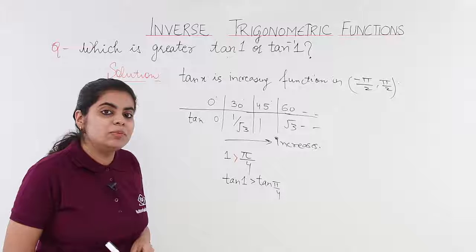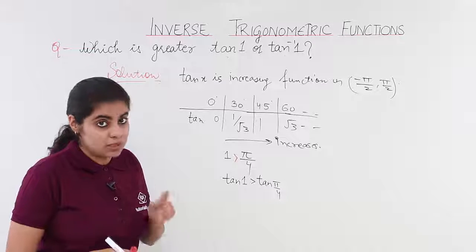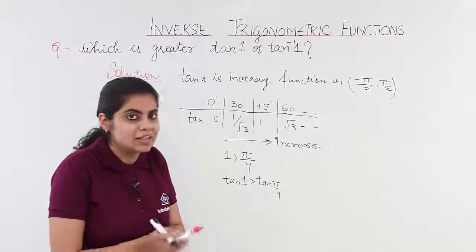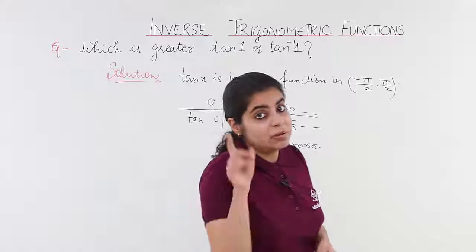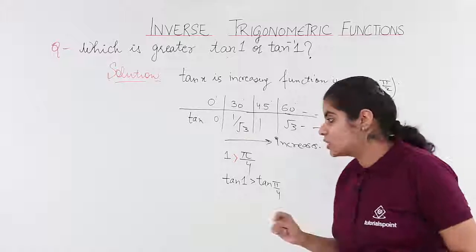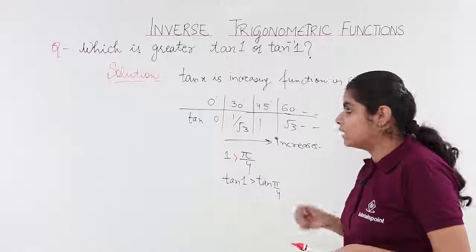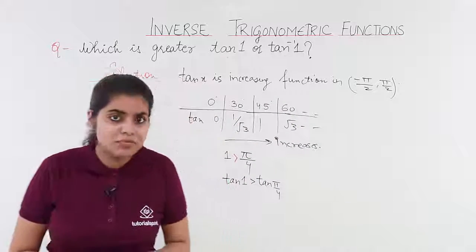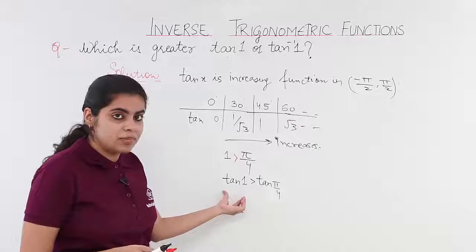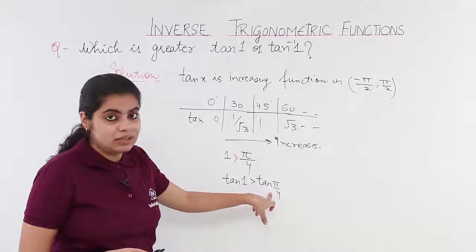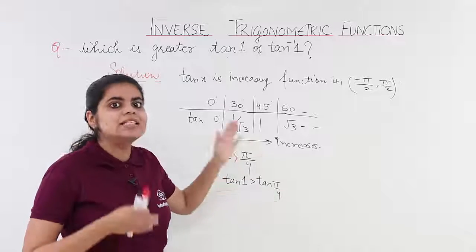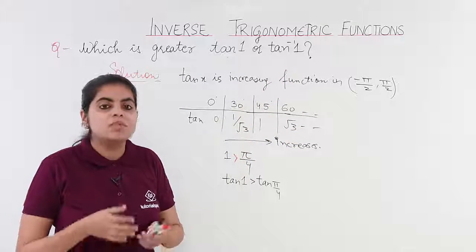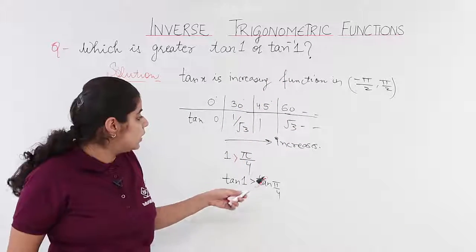I know what is tan pi by 4. Tan pi by 4 is 1. Tan 1 and when will the value of tan be 1? Tan will be 1 at an angle which is 45 degrees. So, I have something that yes. I know tan 1 which is here is greater than 1 which is tan pi by 4. And it is in turn greater than tan inverse 1 because tan inverse 1 is only pi by 4.